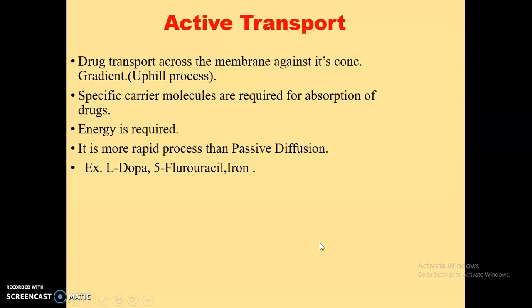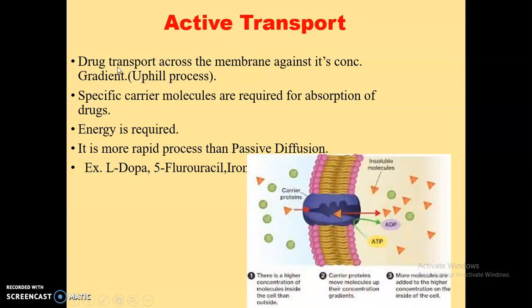The third method is active transport. In active transport, the drug is transported across the membrane against its concentration gradient — that is, from lower concentration to higher concentration. During transportation, it needs the help of a specific carrier molecule. The drug gets attached to the specific carrier molecule, which carries the drug complex, releases the drug, and returns to its original position. Energy is required in the form of ATP. This process is more rapid than passive diffusion. Examples include levodopa in the treatment of Parkinsonism, 5-fluorouracil which is an anti-cancer drug, and iron absorption.